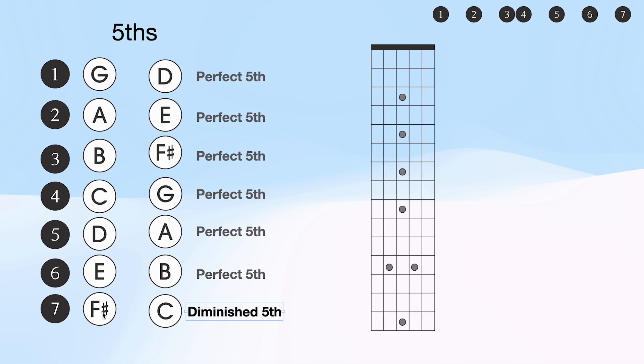Why is it a diminished fifth? The seventh note, F sharp, would require a C sharp to be a perfect fifth. So it's just the nature of the scale.